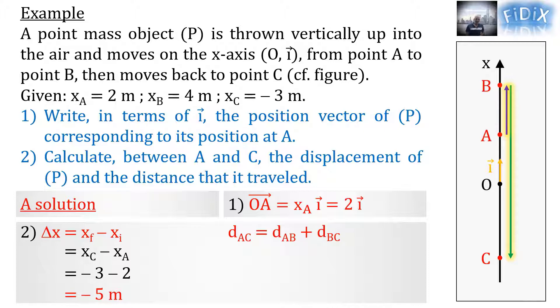Therefore, DAB equals absolute value of XB minus XA, and DBC equals absolute value of XC minus XB. By replacing the abscissas by their values, we get 9 meters. This means that the length of the whole path traveled by P is 9 meters.